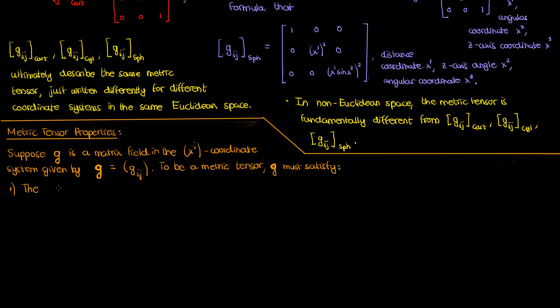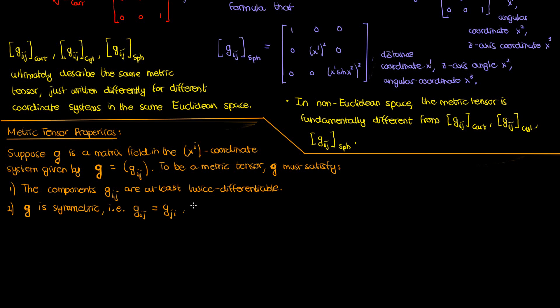The first property is that the components of g must be differentiable to at least the second order — they must be twice differentiable. The second property is that g is symmetric: the components with inverted indices are all equal to each other, so g sub ij equals g sub ji. In algebra terms the matrix representing g equals its transpose. This makes sense because g sub ij is the dot product of ei and ej, so g sub ji is the dot product of ej and ei, and since the dot product is commutative, g sub ij and g sub ji are equal.